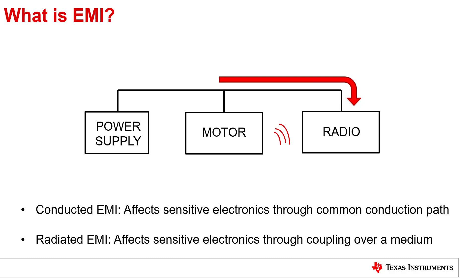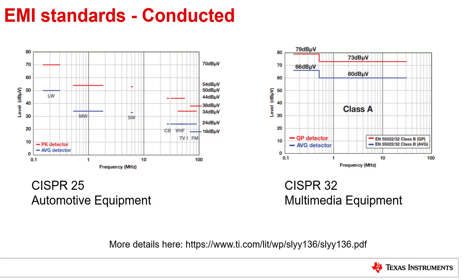When end equipment manufacturers integrate components from various sources, the only way to guarantee that the interfering and sensitive circuits can coexist is through the establishment of a common set of rules, where the interference is limited to a certain level and the sensitive circuits are capable of handling that level of interference. These rules are established in industry standard specifications such as CISPR 25 for automotive equipment and CISPR 32 for multimedia equipment. CISPR standards are critical for EMI design as they will dictate the targeted performance of any EMI mitigation technique.